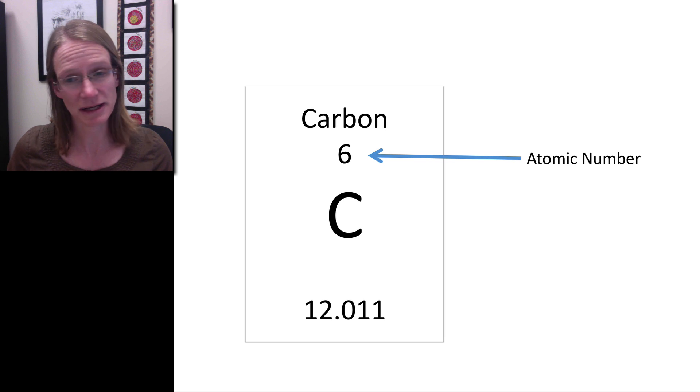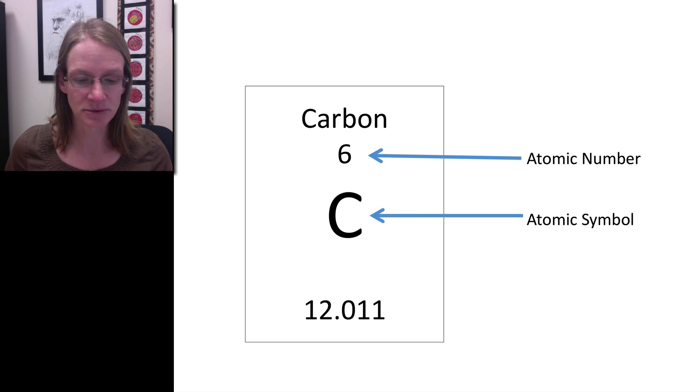The atomic number indicates the number of protons that a given atom contains. For carbon, we know it has six protons, so its atomic number is six.